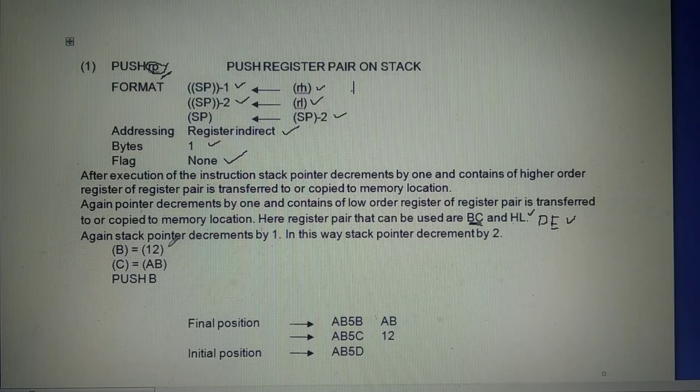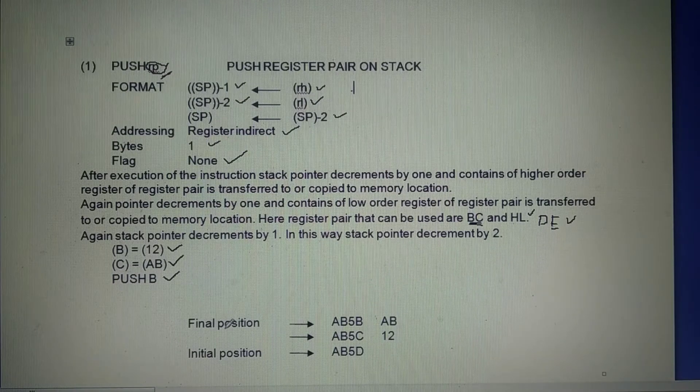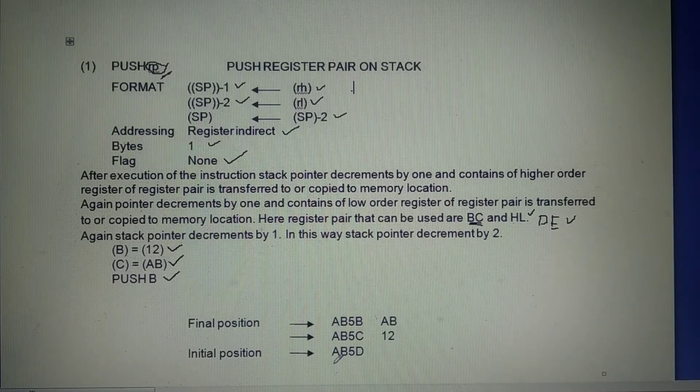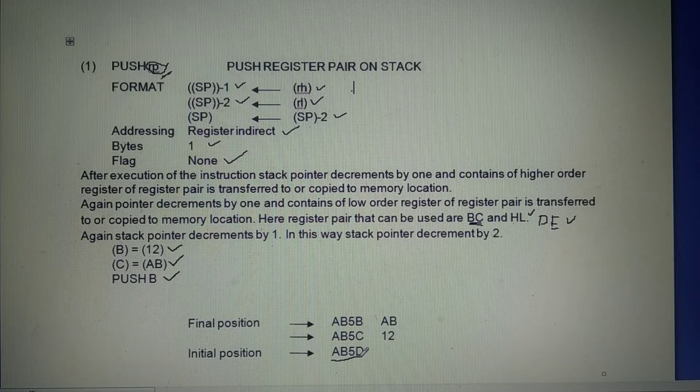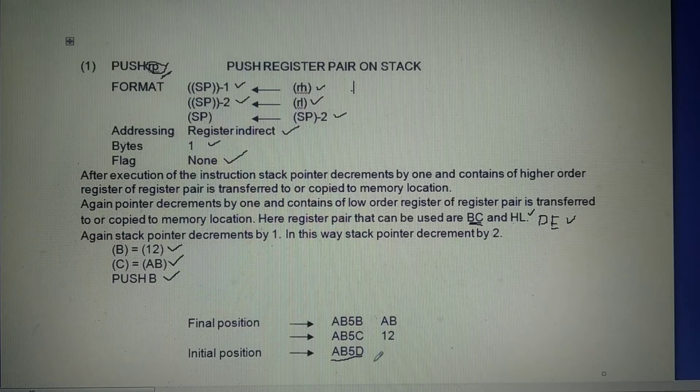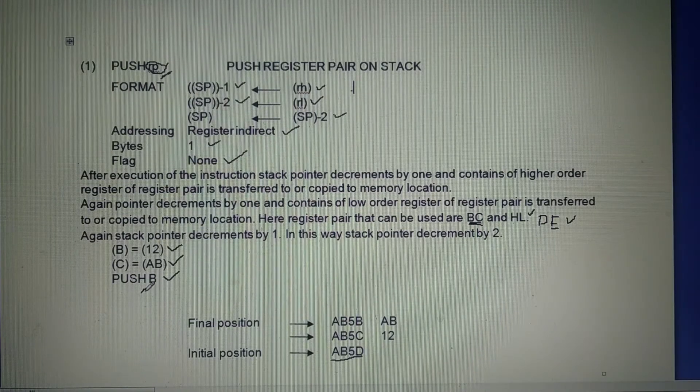Let in register B, number 12 is there. And in register C, number AB is there. After execution of instruction Push B, what happens here? Suppose initially stack pointer points the memory location AB5D. Stack pointer points the memory location AB5D. After execution of the instruction Push B, initially stack pointer decrements by one.